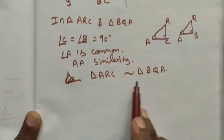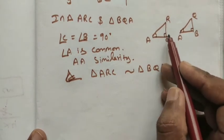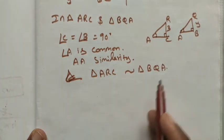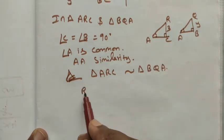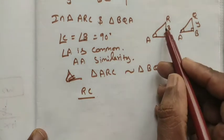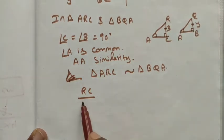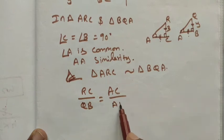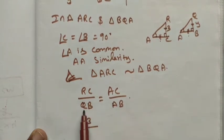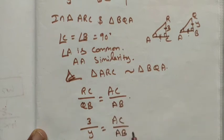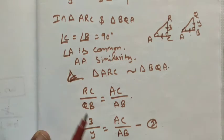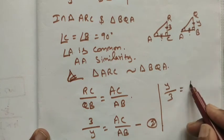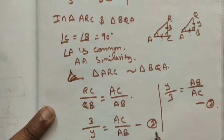By AA similarity, triangle ARC is similar to triangle BQA. Now we write the formula: RC is 3 centimeters, QB equals y. RC divided by QB equals AC divided by AB. Substituting: 3 over y equals AC over AB. Reciprocating: y divided by 3 equals AB divided by AC. This is Equation 2.